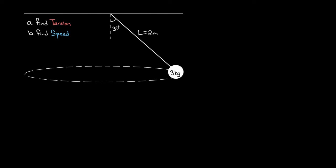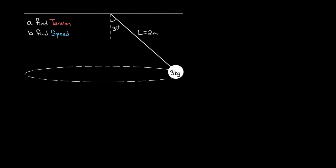I want to show you how to do a slightly more sophisticated centripetal force problem, and this one's a classic. This is the one where there's a mass tied to a string, and that string is secured to the ceiling, and the mass has been given an initial velocity so that it swings around in a horizontal circle. This mass is going to maintain a constant height — it revolves in a horizontal circle. The two questions I want to ask are: what is the tension in the rope, and what has to be the speed of the mass?